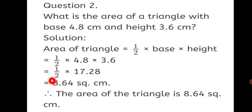Half into 4.8 into 3.6 gives us 17.28. When you divide 17.28 by 2, you get 8.64 square cm as your answer. Here we used the formula for area of triangle: half into base into height.